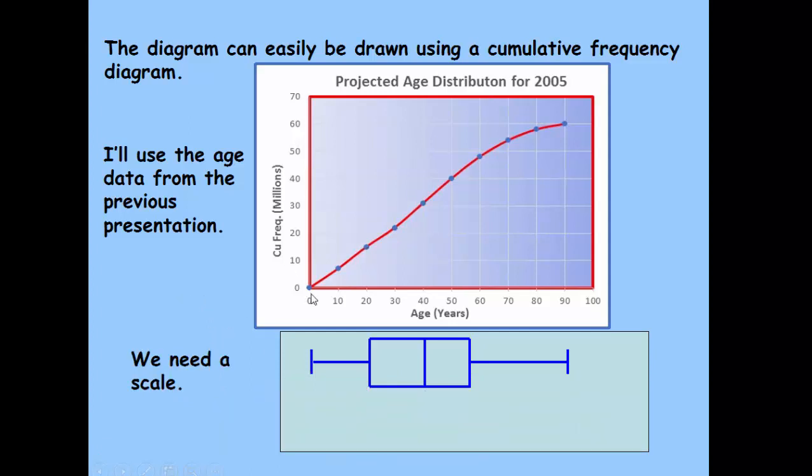We need a scale. Well the scale's the same as the horizontal scale here, but we'll put it down here so it's easier to see. And there you go, there's the box and whisker plot.